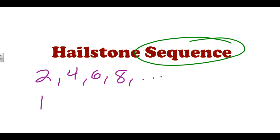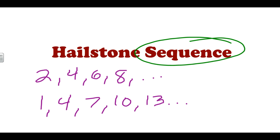We could start a sequence with 1 and add 3 every time, and we could keep going and going. The Hailstone Sequence is a sequence like this, except the rules are a bit more complicated than just listing every even number or starting with 1 and adding 3.